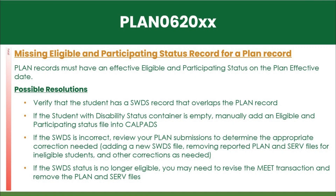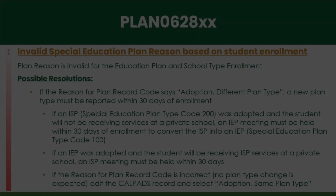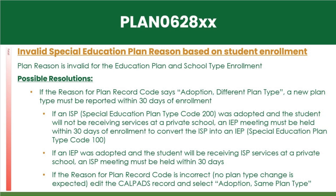Plan 0620: Your LEA has reported a plan file for a student who does not have an active, eligible, and participating status as of your plan effective date. If an ISP was adopted and the student will not be receiving services at a private school, an IEP meeting must be held within 30 days of enrollment to convert the ISP into an IEP.